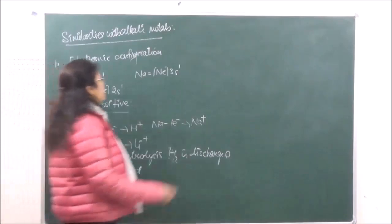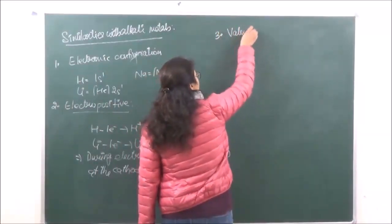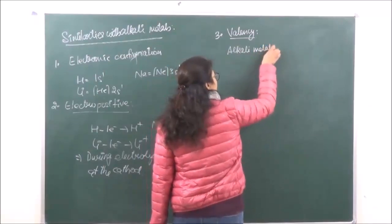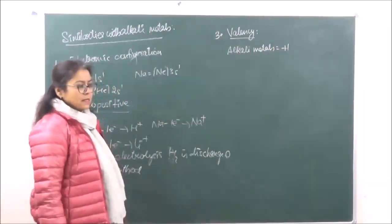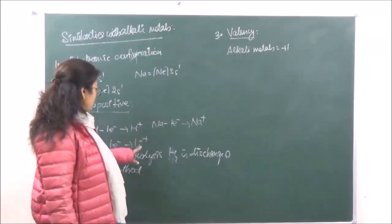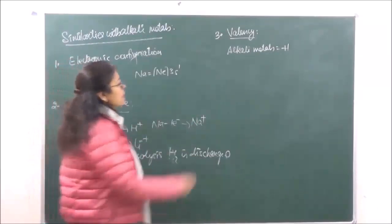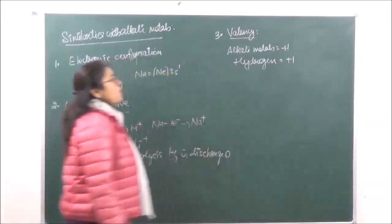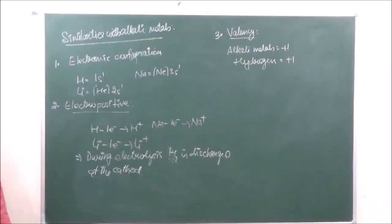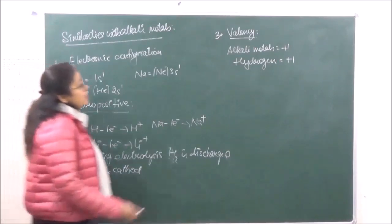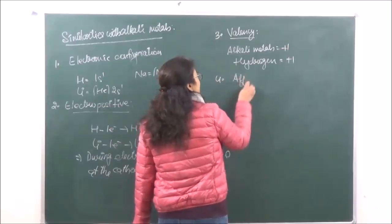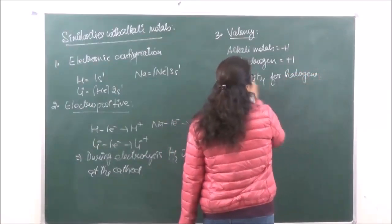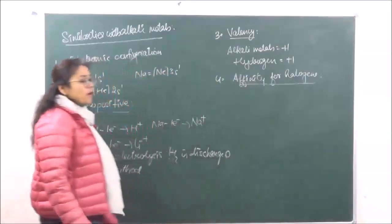The third similarity is valency. The valency of alkali metals is equal to +1 because they have a tendency to lose one electron — as seen with Li⁺ and Na⁺. Similarly, hydrogen also exhibits a valency of +1. Just like alkali metals, hydrogen also has affinity for halogens. Halogens are highly electronegative elements, so it has affinity with halogens.